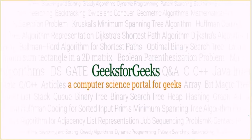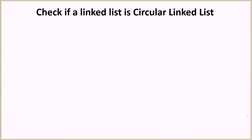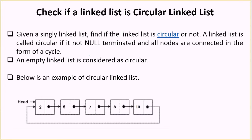Hello everyone and welcome to GeeksForGeeks. The problem we are going to see today is to check if a linked list is a circular linked list or not. Let's look at the definition of a circular linked list: a linked list is called circular if it is not null-terminated and all nodes are connected in the form of a cycle.